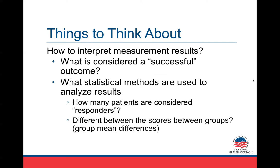After getting beyond measurement properties, how do you interpret the measurements you actually get? What's considered a successful outcome for a patient and what statistical methods are used to analyze those results? As a physician, I always like to see results presented as how many people got better. But sometimes clinical trials analyze differences in scores between groups — group mean differences — which are really not that meaningful. To say group A had an average change in score of two points takes it away from being patient-centered. My preference is to say X percent of people got better in this group compared to the other treatment.